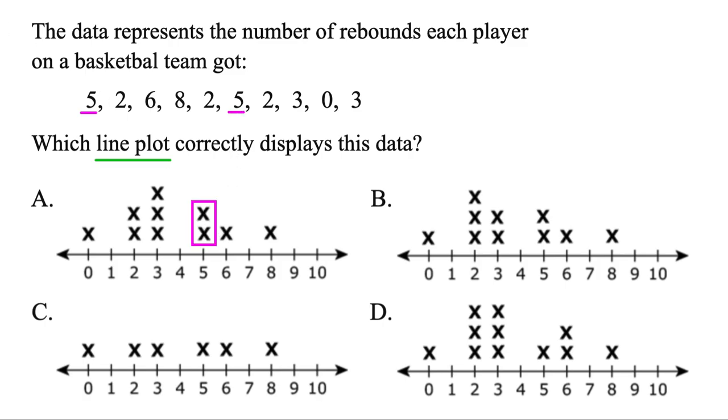So A has that, and so does B, but C, that just says one player got five rebounds, that's no good. And same with D. So let's go ahead and get rid of those two.